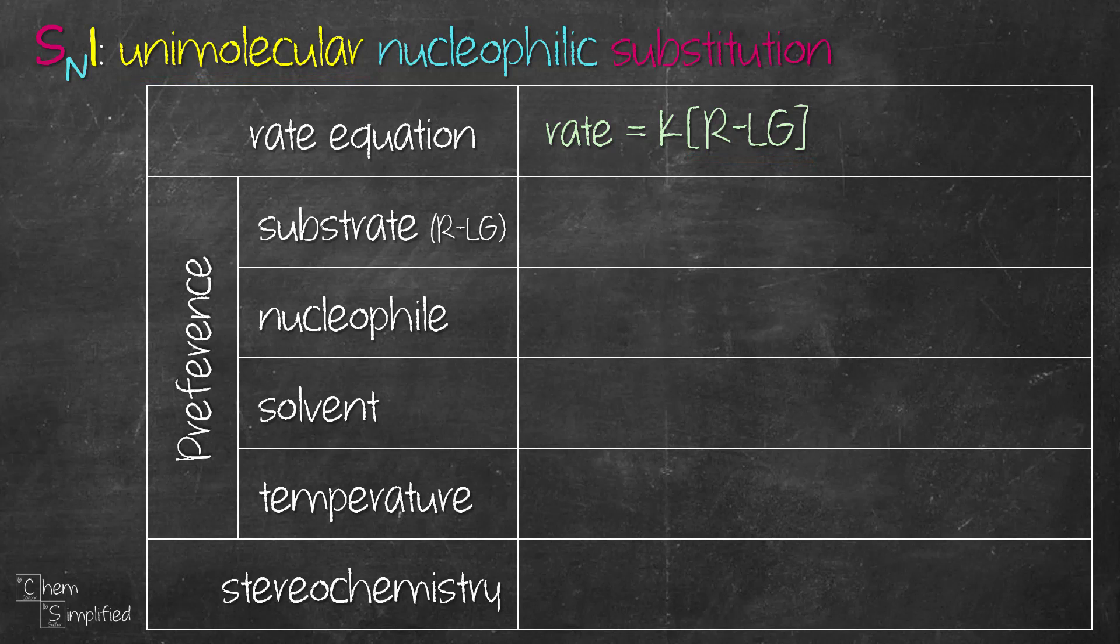Let's look at the factors that will favor SN1 reaction. Since SN1 involves the formation of carbocation, it will favor substrates that form stable carbocations. The more stable, the faster the reaction will go. Tertiary substrate is most favorable because tertiary carbocation is the most stable, followed by secondary and primary, which is least favorable because primary carbocation is highly unstable.